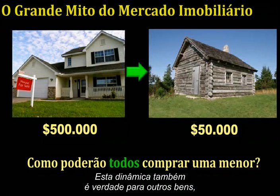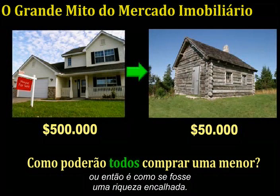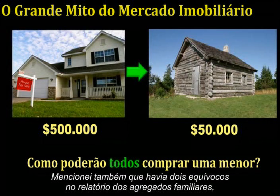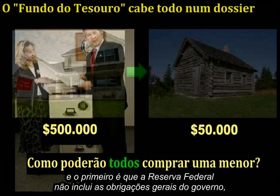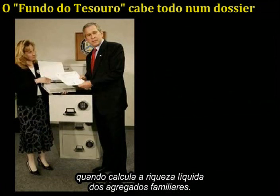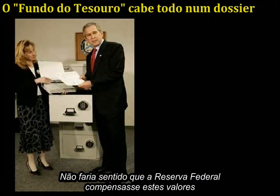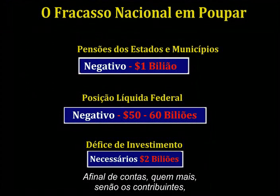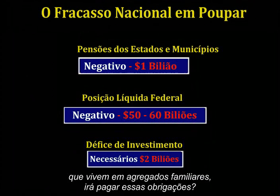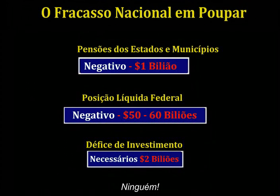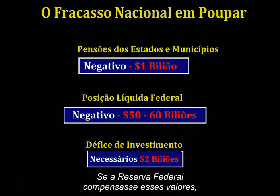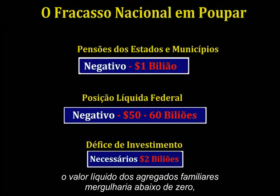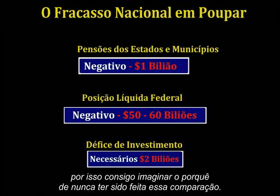This same dynamic is true for other assets as well — sufficient buyers are essential or the wealth is as good as stranded. The first oversight is that the Fed mysteriously does not include the general liabilities of the government when calculating household net wealth. After all, who else besides the taxpayers living in households are going to pay off those liabilities? Nobody. If the Fed did perform this offset, household net worth would plunge below zero.